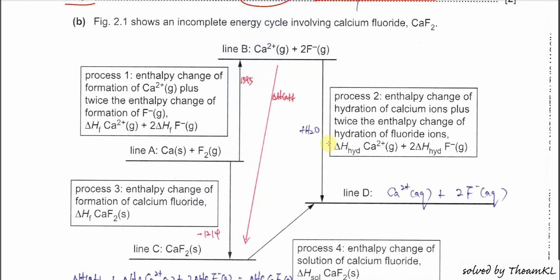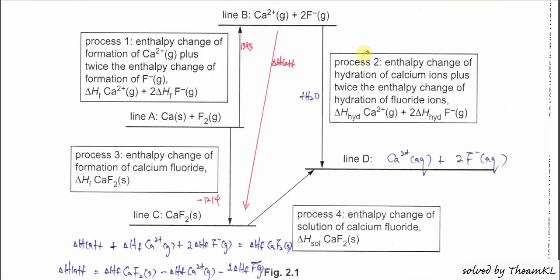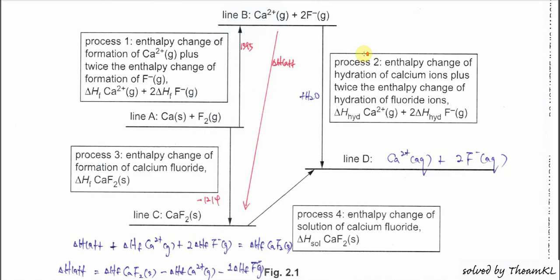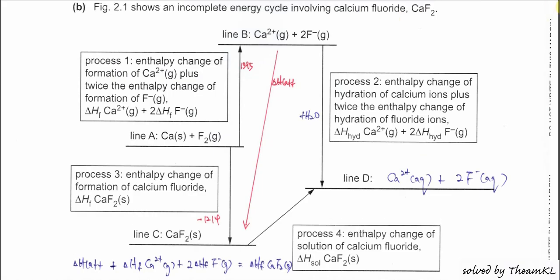Part B: Figure 2.1 shows an incomplete energy cycle involving calcium fluoride. We need to complete line D with state symbols. Looking at the cycle, it starts with point A — calcium solid and fluorine gas. Calcium then forms calcium gaseous ions.